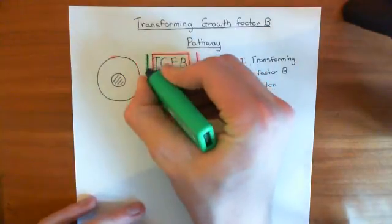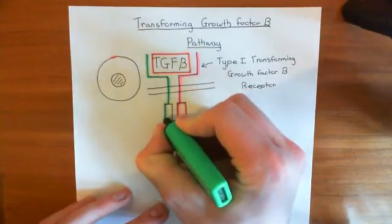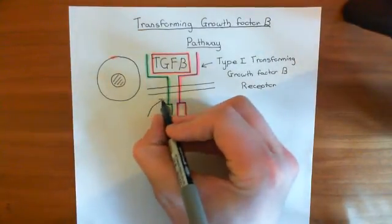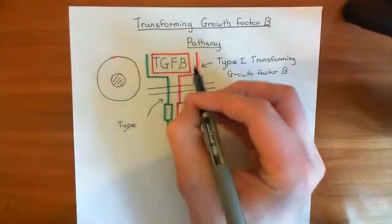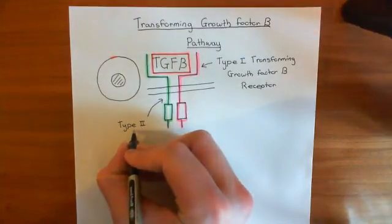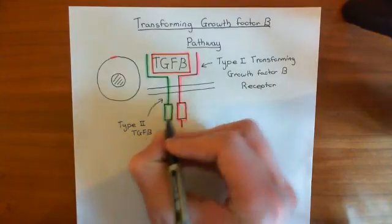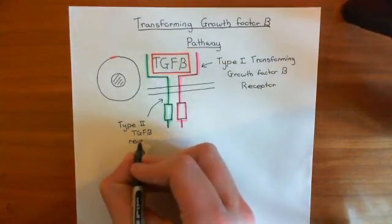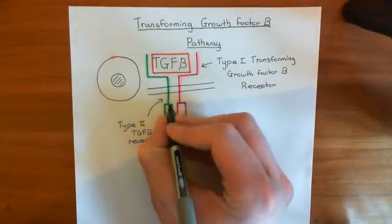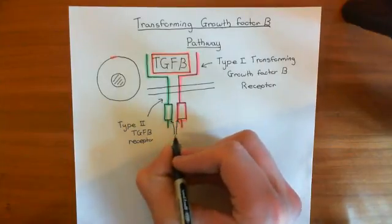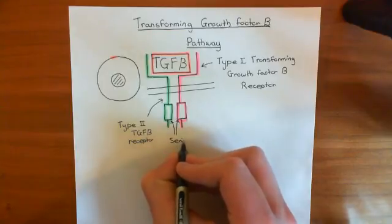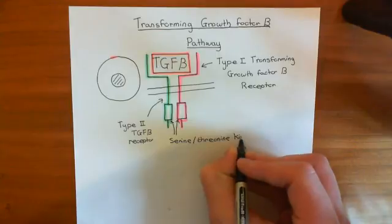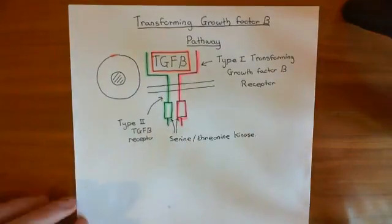When transforming growth factor beta comes and binds to this dimer of type 1 and type 2 transforming growth factor beta receptors, it activates the domain of the type 2 receptor. This domain, present in both the type 1 and type 2 receptor, is a serine-threonine kinase, which means it has a catalytic portion that adds phosphate groups onto serine and threonine residues. Let me quickly remind you of what the structure of these amino acids looks like.